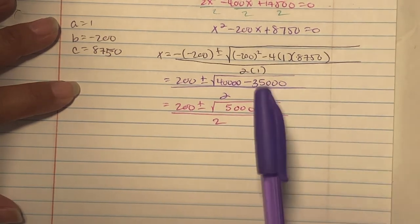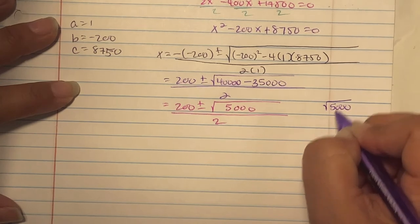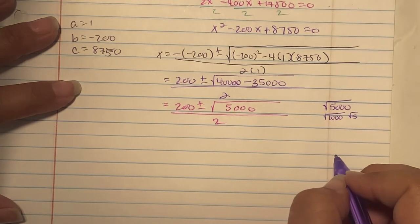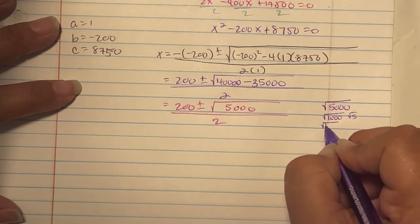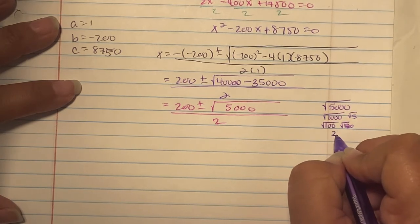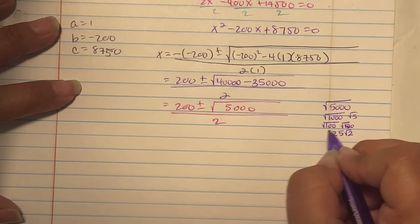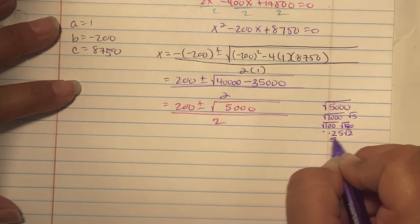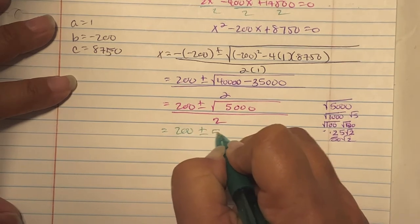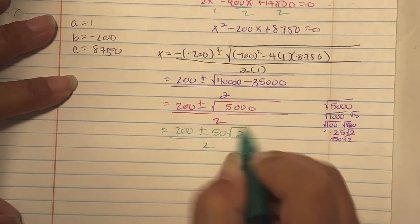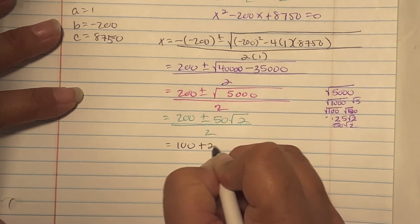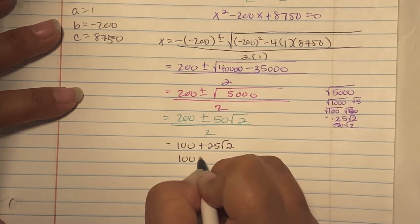Square root of 5,000, think of the square root of 1,000 times 5, which is the square root of 1,000 times the square root of 50. We get 25 square roots of 2 times another 10, so we have 50 square roots of 2 as our answer here. So we get 200 plus and minus 50 square root of 2. I left it like this to reduce. We get 100 plus 25 square roots of 2, and 100 minus 25 square roots of 2. They're both going to end up in positive answers.